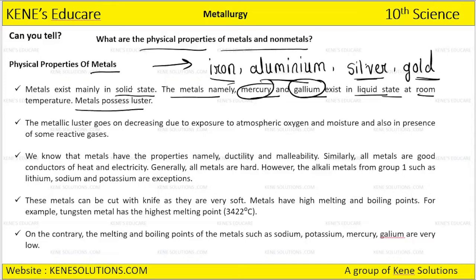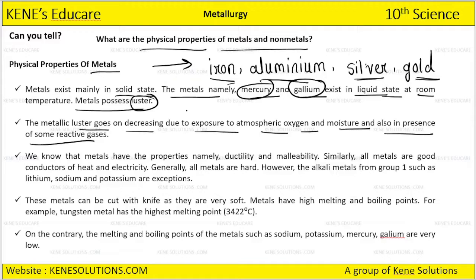Metals possess luster — they are shiny. Iron, aluminum, silver, and gold all have a specific shine on them. However, metallic luster decreases due to exposure to atmospheric oxygen, moisture, and in the presence of some reactive gases.